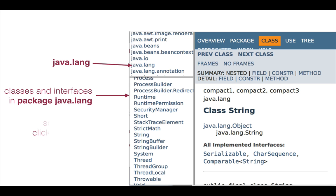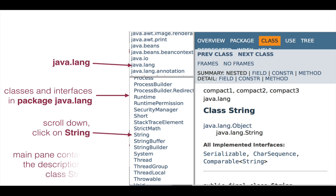Now scroll down the list of classes, choose class String, and click it. Now the main pane contains a description of class String. We'll look at this pane in detail in a later video.